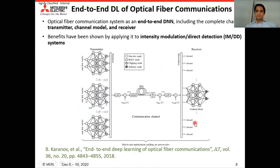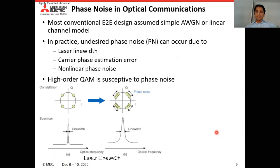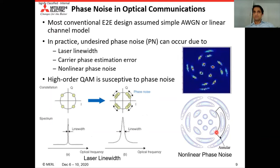The other paper is based on end-to-end deep learning for optical fiber communication. They took an optical communication system including the transmitter, channel, and receiver and designed it as an end-to-end deep neural network, showing benefits by applying it to intensity modulation and direct detection. Coming to phase noise in optical communication, many end-to-end methods have been used for AWGN or linear channels, but optical communication has many nonlinear impairments due to laser linewidth, carrier phase estimation error, or nonlinear phase noise.